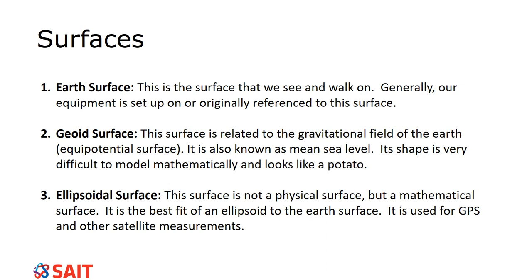The geoid is impacted by things such as mountain ranges — the geoid actually sinks or raises near them. In lower areas, if the mantle is lower or there's less iron in the core, you'll see anomalies like little low areas. It's a really unique surface. Check it out — Google it and take a look at what it looks like.